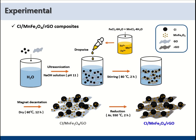After that, we stirred at 80 degrees Celsius for 2 hours. The product was filtered and dried to obtain CI/MnFe2O4/GO. And then GO was reduced to rGO through an annealing process.